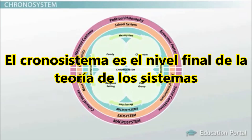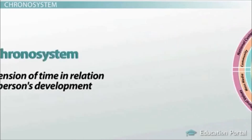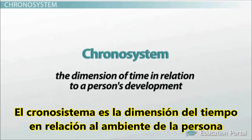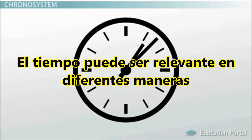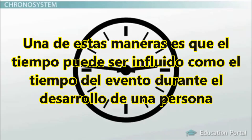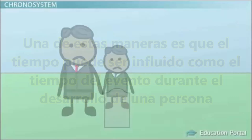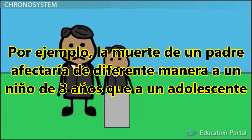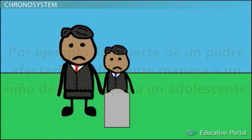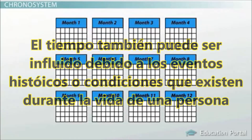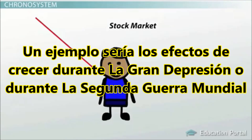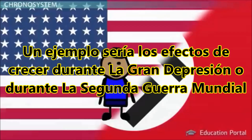The Chronosystem is the final level in Ecological Systems Theory. The Chronosystem refers to the dimension of time in relation to a person's development. Time can be relevant in different ways: one way is the timing of an event during development — for example, the death of a parent would affect a three-year-old differently than a teenager. Time can also be an influence because of historical events or conditions that exist during a person's life, such as growing up during the Great Depression or World War II.